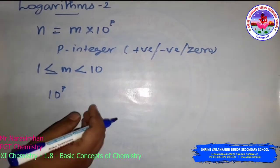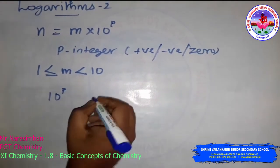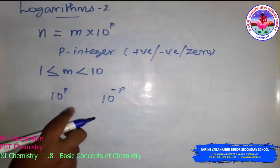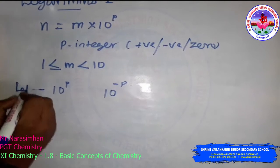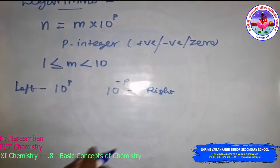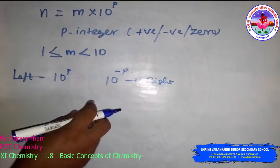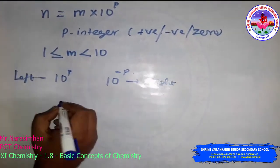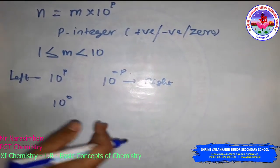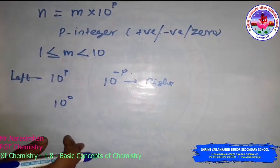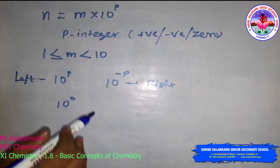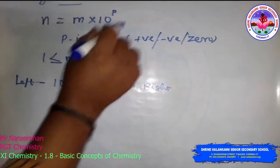If you move p places to the right, multiply by 10 power negative p. If you do not move the decimal point at all, multiply by 10 power 0. Write the new decimal obtained by the power of 10 — that is 10 power p — which gives the standard form of the decimal.